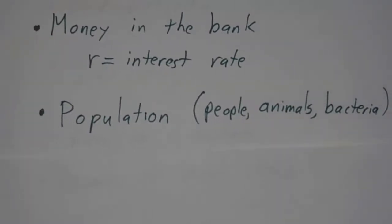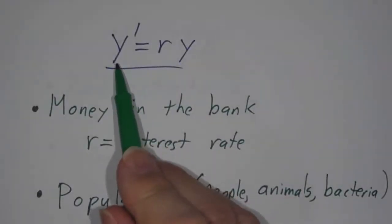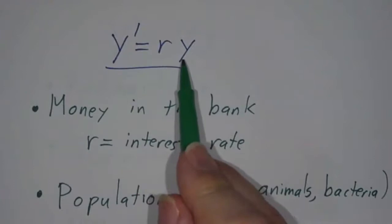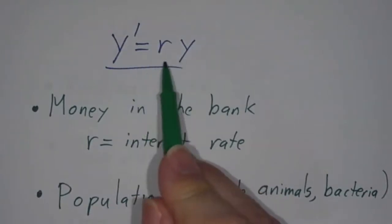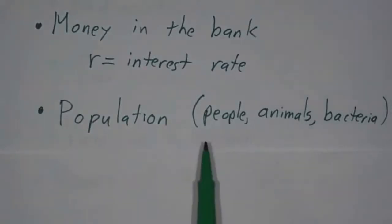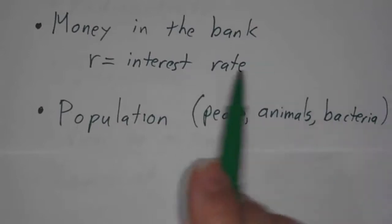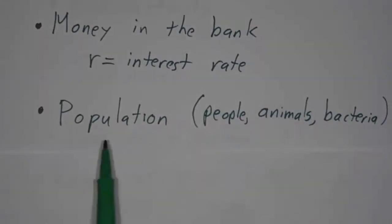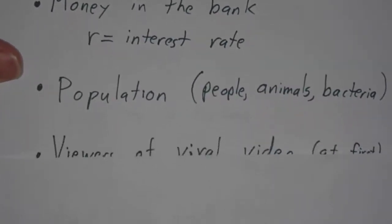You also have populations. The more people there are, the more people die, are born, immigrate, and emigrate. Almost all the reasons for changes in population are proportional to the population itself. This is true for people, animals, and bacteria. All sorts of population problems show exponential growth until you start running out of food or space.